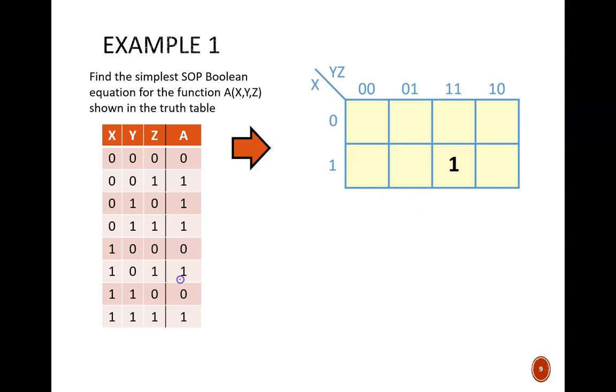The next output 1 we'll look at is here. In this case, x equals 1, y equals 0, and z equals 1. Where is the corresponding square? We need to find the place where x equals 1 and y, z read 0, 1. This leads us to this square, so we fill in a 1.